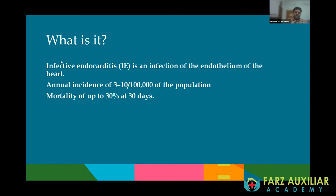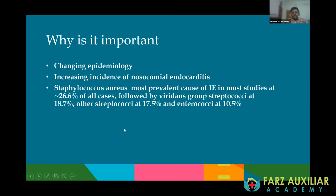It is an important condition for us to understand. The epidemiology of infective endocarditis is changing and there is an increasing incidence of nosocomial endocarditis. Staphylococcus aureus is the most prevalent cause of infective endocarditis in most studies across the world, even in India, at 26.6% of all cases. This is followed by the viridans group of streptococci at about 18.7% and other streptococci at about 17.5%.